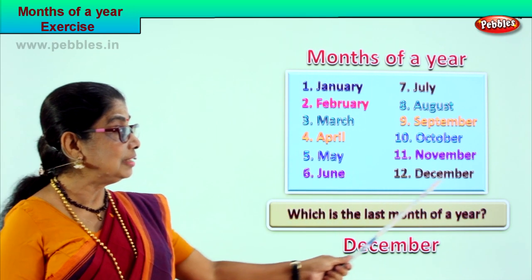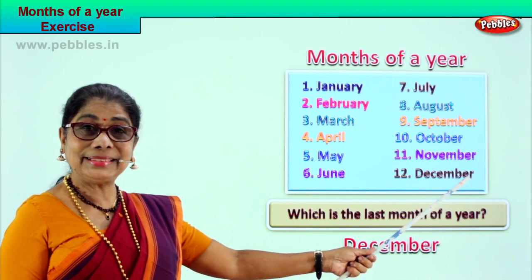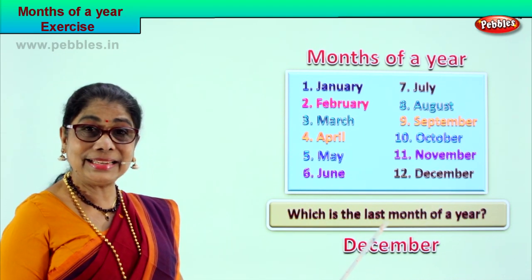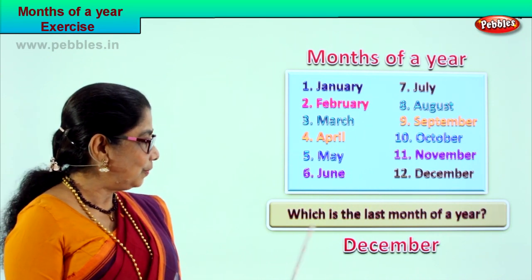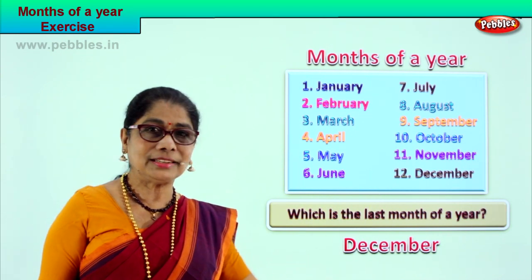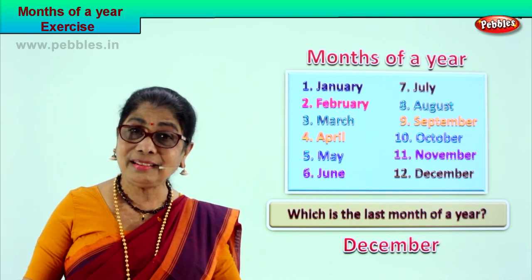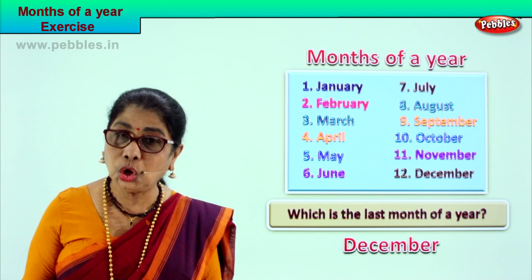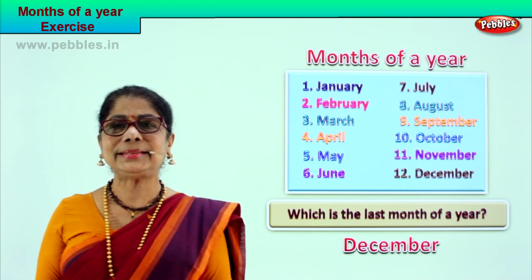Look at the chart — the last month is December. Spell last: L-A-S-T. So you did find the answer: which is the last month of the year? December is the last month of the year. Good, let's go to the next exercise.